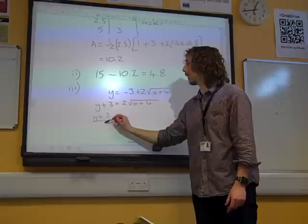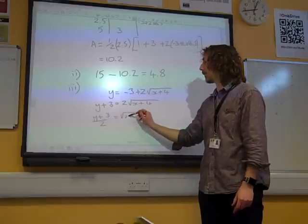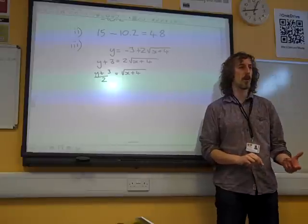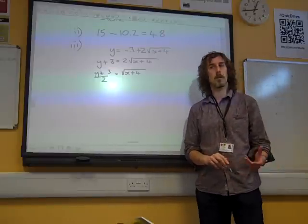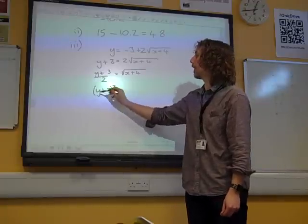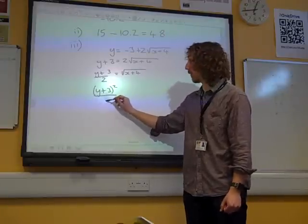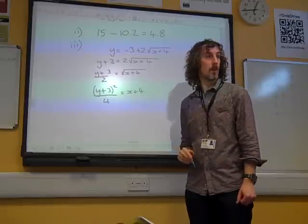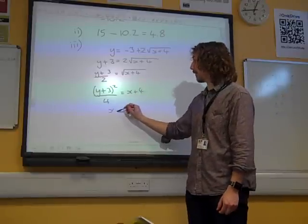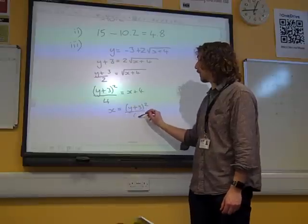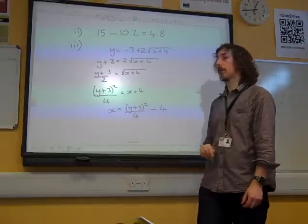Y plus 3 over 2 is root x plus 4. What's the reverse operation of square rooting? It's squaring. So we get y plus 3 squared over 2 squared, so over 4 is x plus 4. So x is y plus 3 squared over 4 minus 4.